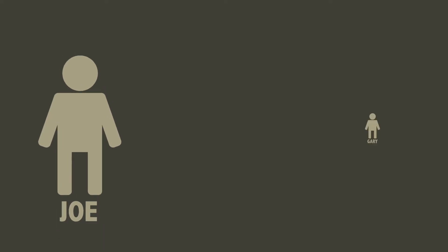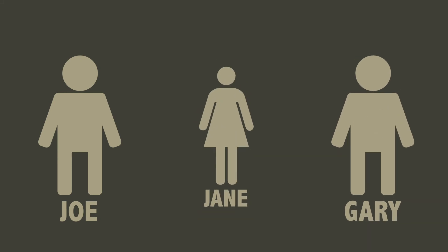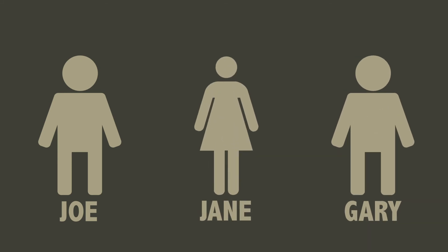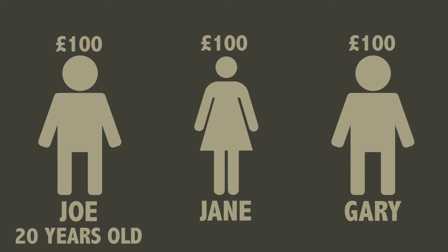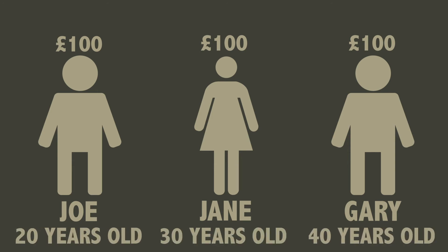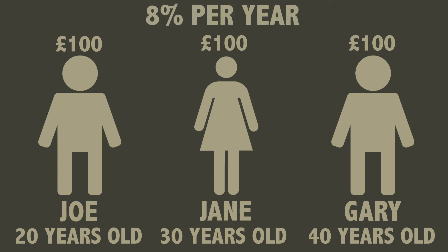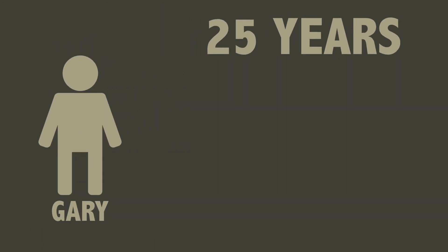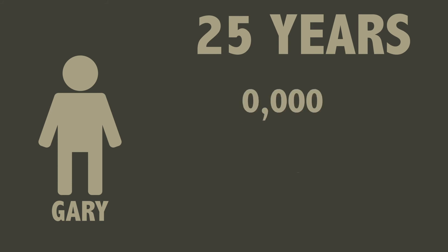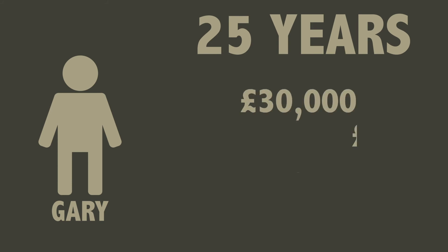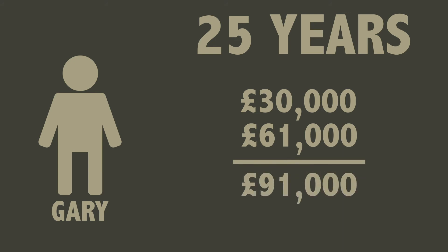Let's bring back Joe and Gary from earlier and introduce Jane. They all started investing £100 a month until they were 65. Joe started when he was 20, Jane started when she was 30, and Gary started when he was 40, and they all saw an average return of 8% per year over that whole period. Gary, who'd been investing for 25 years, had deposited £30,000 of his own money and gained nearly £61,000, bringing his total to around £91,000.